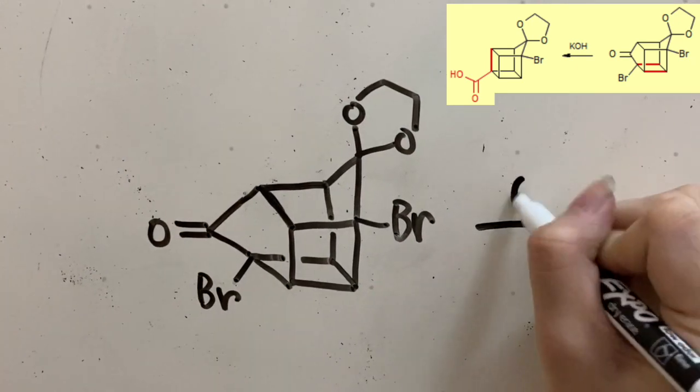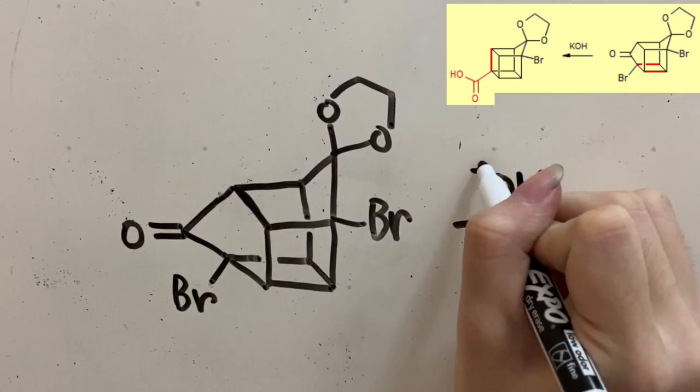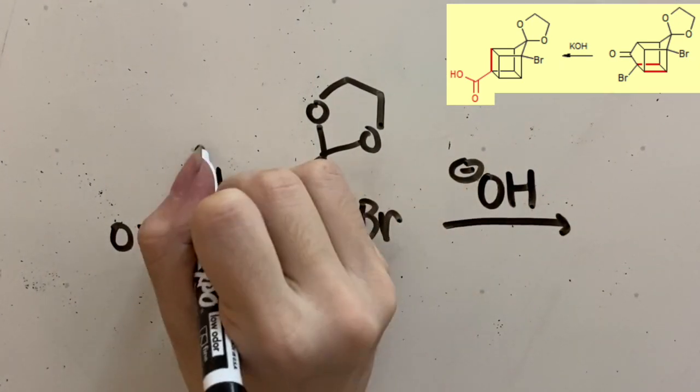The first step is the reaction of the base with the hydrogen on this carbon to form an enolate.